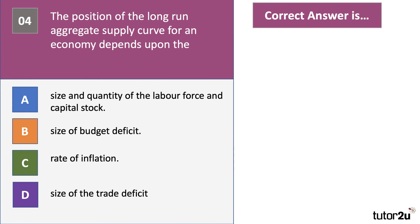Question four: the position of the long run aggregate supply curve for an economy depends on what? Four options — A, B, C, and D — please have a go. Long run aggregate supply is essentially the productive capacity and productive potential of the economy.